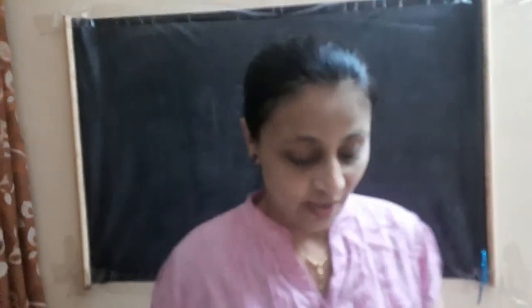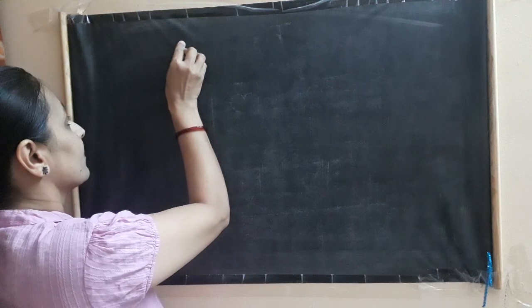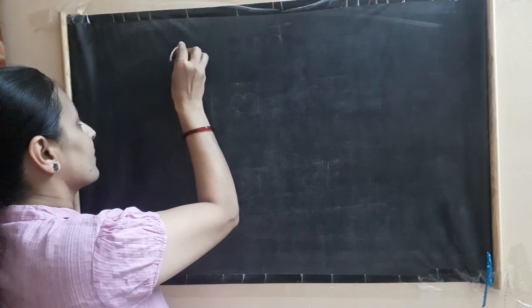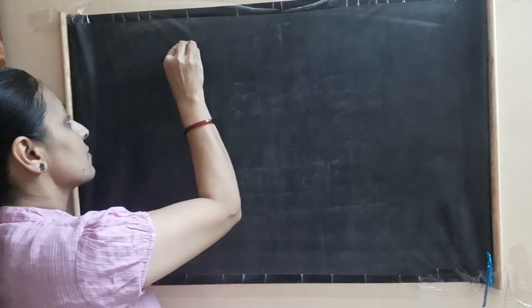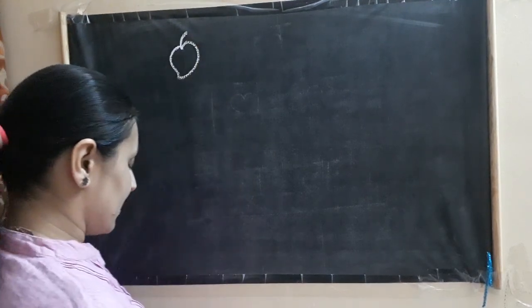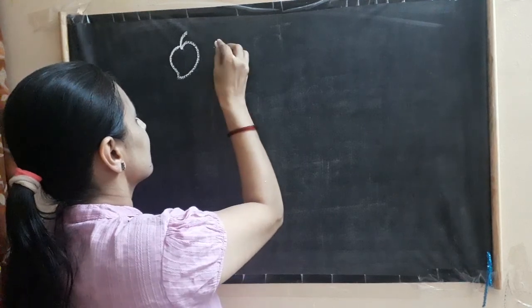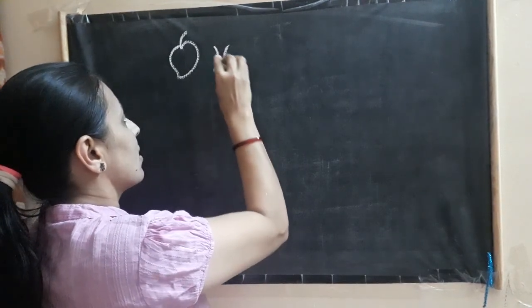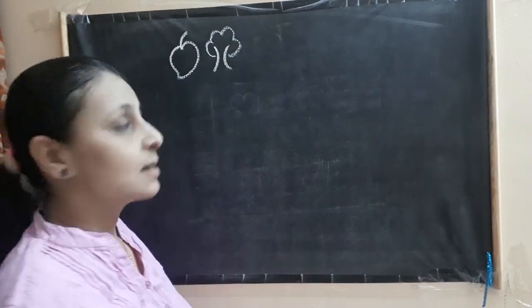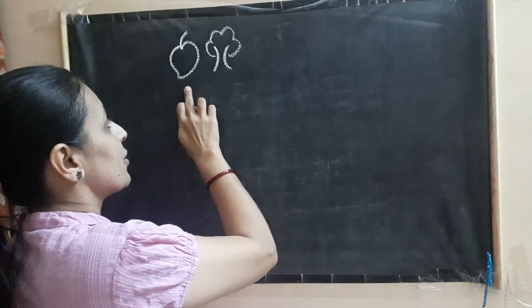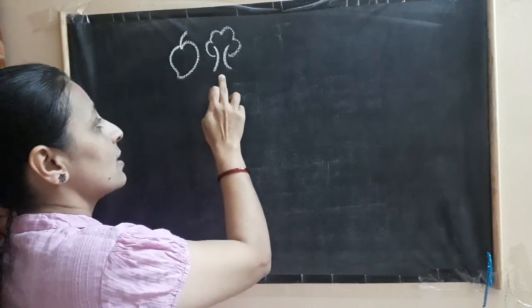Children, let's understand a few more patterns on the board. I'm going to draw a mango, okay, and then let's draw a tree. Now tell me, children: first I have drawn a mango, second is a tree.